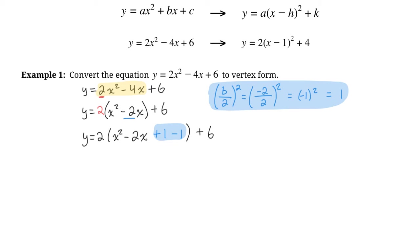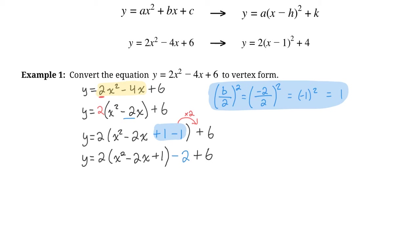Next we take the subtracted number — the minus 1 — and bring it outside of the brackets. We write y equals 2 times (x squared minus 2x plus 1), close the bracket, and bring that minus 1 outside. Since that minus 1 was inside brackets with a 2 on the outside, we multiply it by 2, giving minus 2. Then we combine that minus 2 with the plus 6.